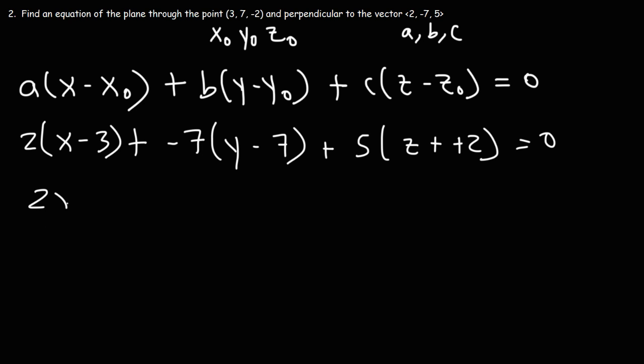So we're going to have 2X minus 6 minus 7Y plus 49 and then plus 5Z plus 10. So now combining like terms, this is going to be 49 plus 10, that's 59, minus 6, which is 53.